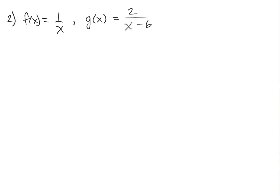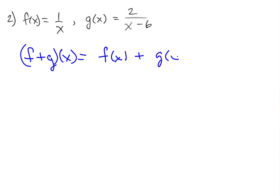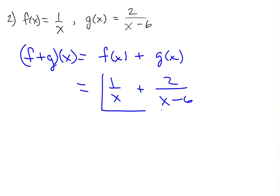Let's try another example. We have f(x) = 1/x and g(x) = 2/(x - 6), where x - 6 is entirely in the denominator. We want to find (f + g)(x), which equals f(x) + g(x). Substituting, we get 1/x plus 2/(x - 6). You could combine those with a common denominator, but for now we'll leave that as our combination function.